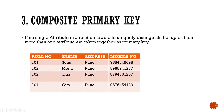If no single attribute in a relation is able to uniquely distinguish the tuples — if there is no single attribute that has a unique value — then more than one attribute can remain the primary key. For example, if you have role number and Aadhar card number, both are unique. Each identification number is different. In this case, where only one attribute is not sufficient, we can add more than one attribute to form the primary key.